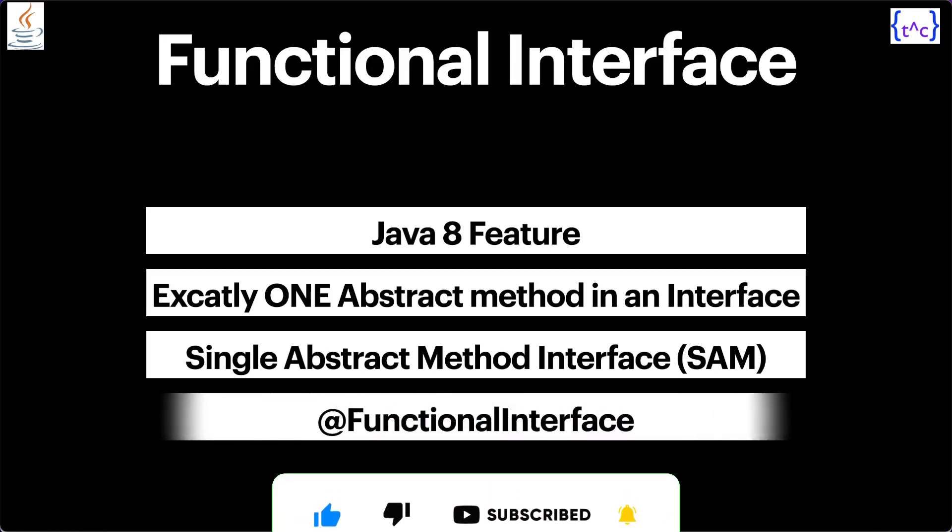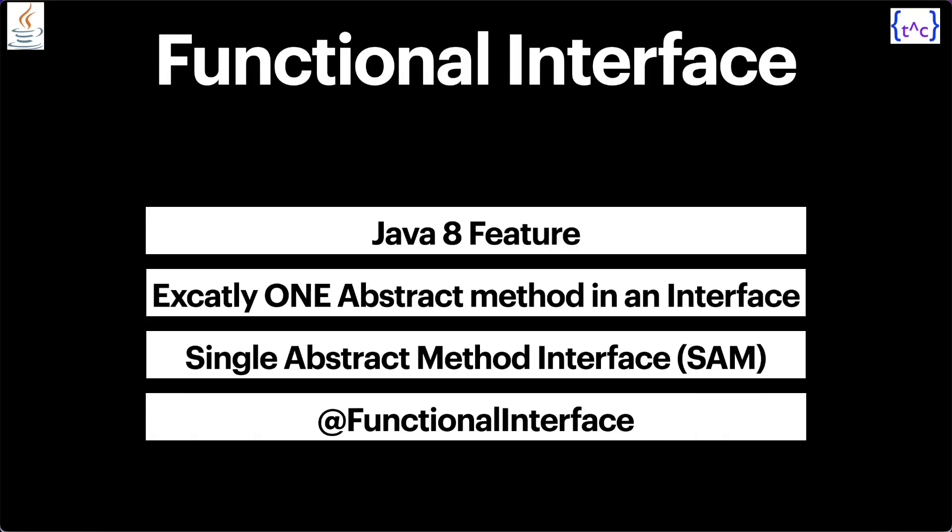How can an interface be called a functional interface? We put the @FunctionalInterface annotation on top of that interface. Although this annotation is not compulsory or mandatory, it is a good practice to have it if you want to enforce the interface to remain a functional interface. Any interface which has only one abstract method can be implemented with the help of a lambda expression. If an interface has more than one abstract method, it cannot be implemented with a lambda expression, so we lose that benefit.